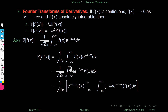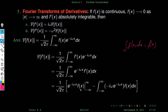Applying integration by parts, this becomes (1/√2π) times [e^{-iωx} · f(x)] from -∞ to +∞, minus the integral of the derivative of e^{-iωx} times f(x). The derivative of e^{-iωx} is -iω·e^{-iωx}, and the integral of f'(x) is f(x), since integration and differentiation are inverse operations.